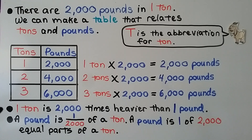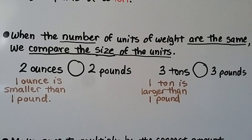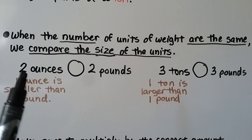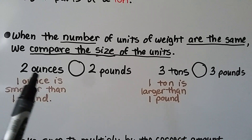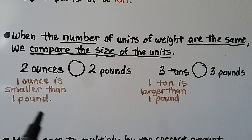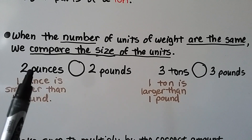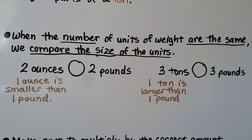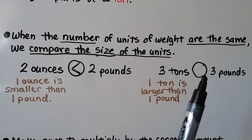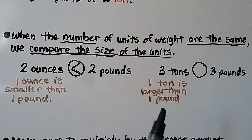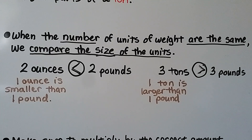One ton is 2,000 times heavier than one pound. A pound is 1/2000th of a ton — one of 2,000 equal parts. When the number of units is the same, we compare the size of the units. Two ounces is less than two pounds because an ounce is smaller than a pound — we need 16 ounces to make one pound. Similarly, three tons is greater than three pounds because one ton is much larger than one pound.